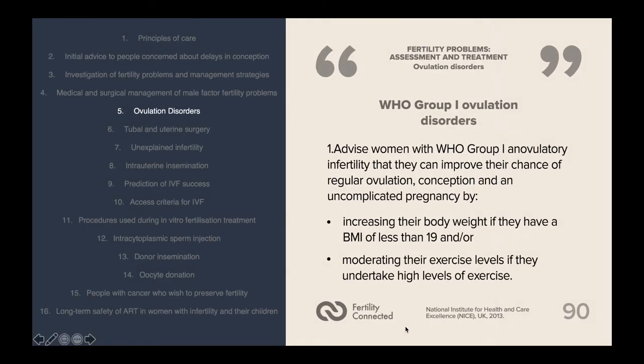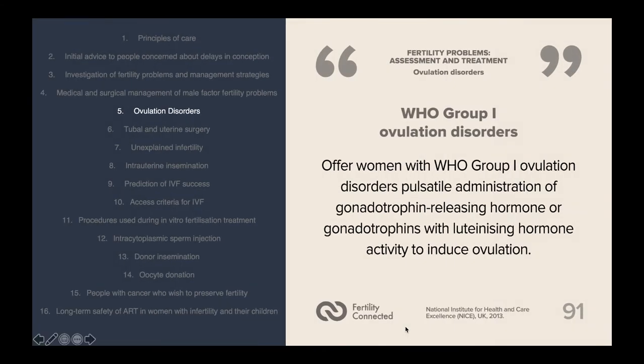For WHO group one ovulation disorders, women should be advised that they can improve their chance of regular ovulation, conception and uncomplicated pregnancy by increasing their body weight if they have a BMI of less than 19, and/or moderating their exercise levels if they undertake high levels of exercise. These women should be offered pulsatile administration of gonadotrophin-releasing hormone or gonadotrophins with luteinizing hormone activity to induce ovulation.